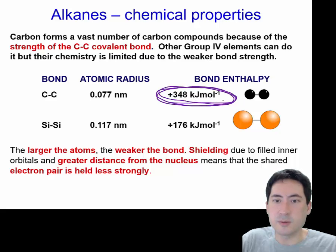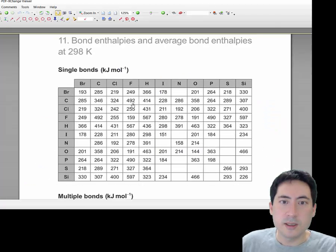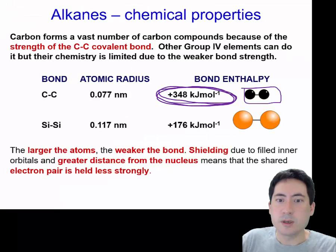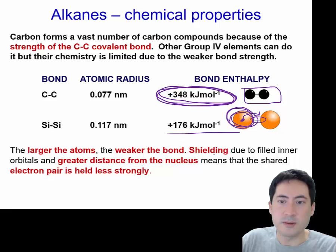It takes 348 kilojoules per mole to break it, which shows you how stable the carbon-carbon bond. If we look at the carbon-hydrogen bond here, that's also very high, 414. So it's important to go back to your topic 2 and talk about the orbitals. So these large atoms have shielding, so the positive nuclear charge doesn't have a good ability to attract itself to the bonding electrons here. That's why this silicon has a much weaker bond enthalpy.